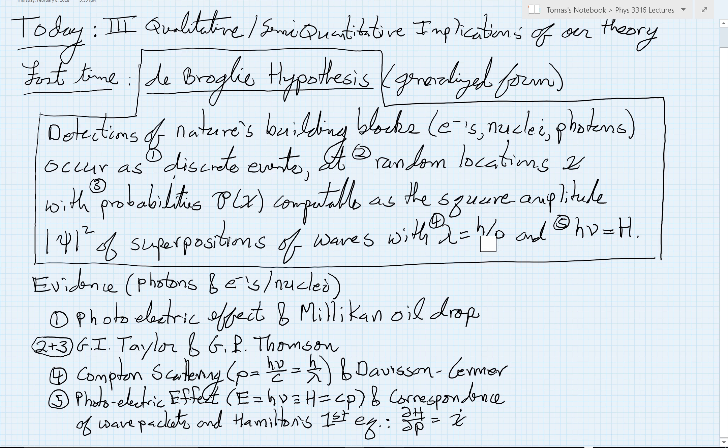But those waves have to have a particular wavelength and frequency so that we can compute the superposition. And the particular wavelength is h over p, and the particular frequency is given by h nu equals the Hamiltonian, which is just the energy of the particle written in terms of its momentum.